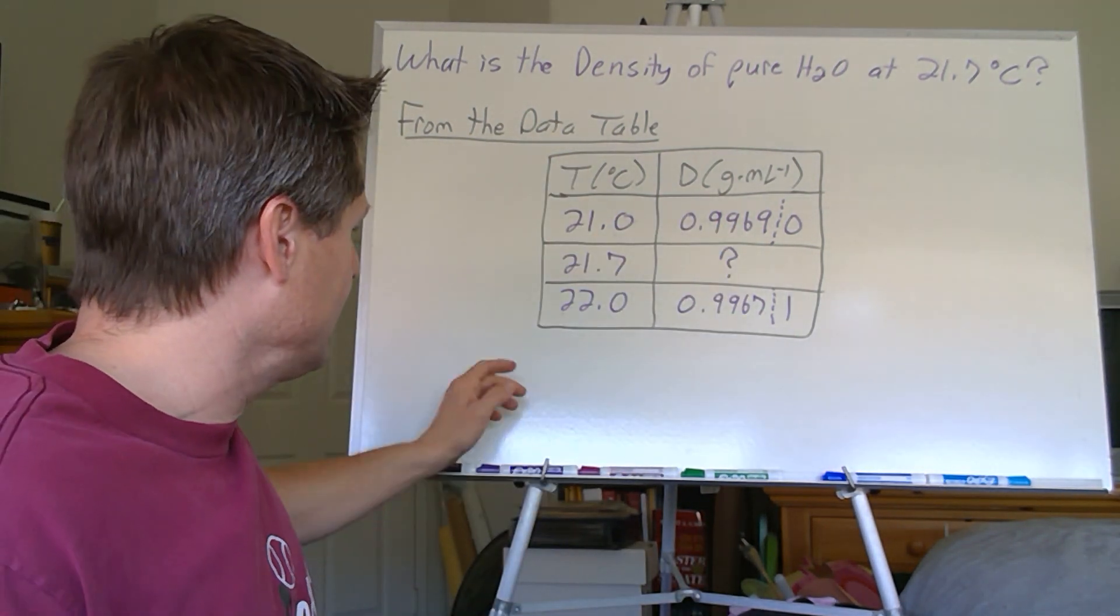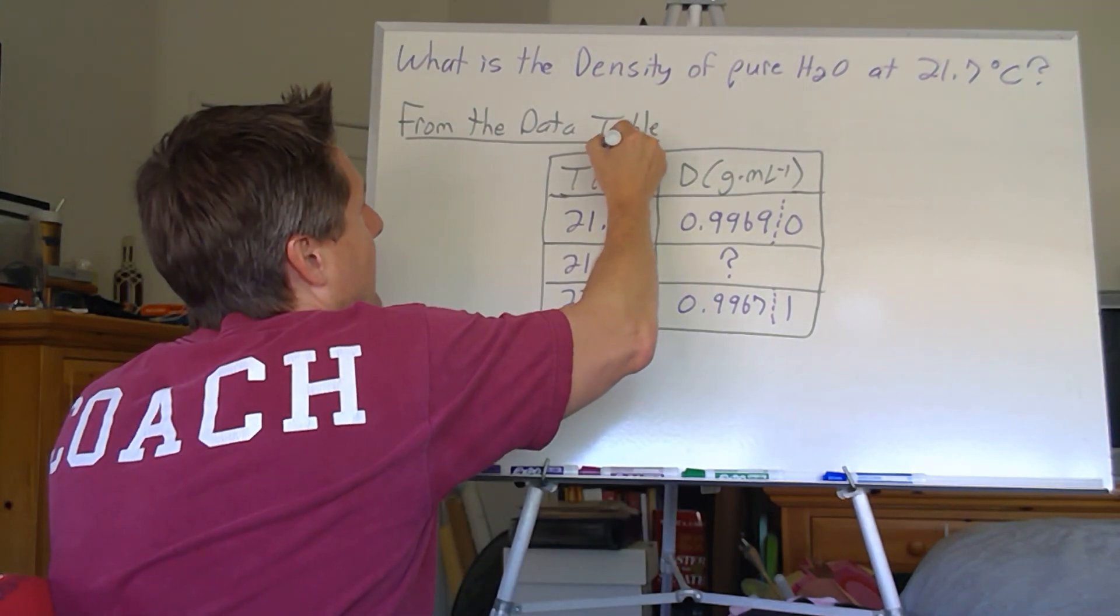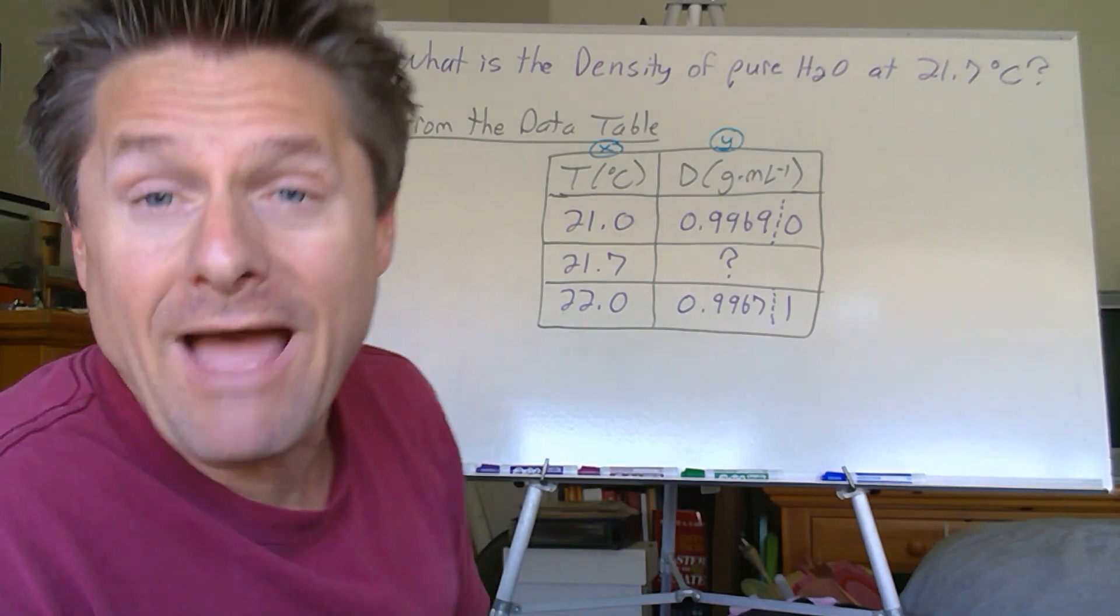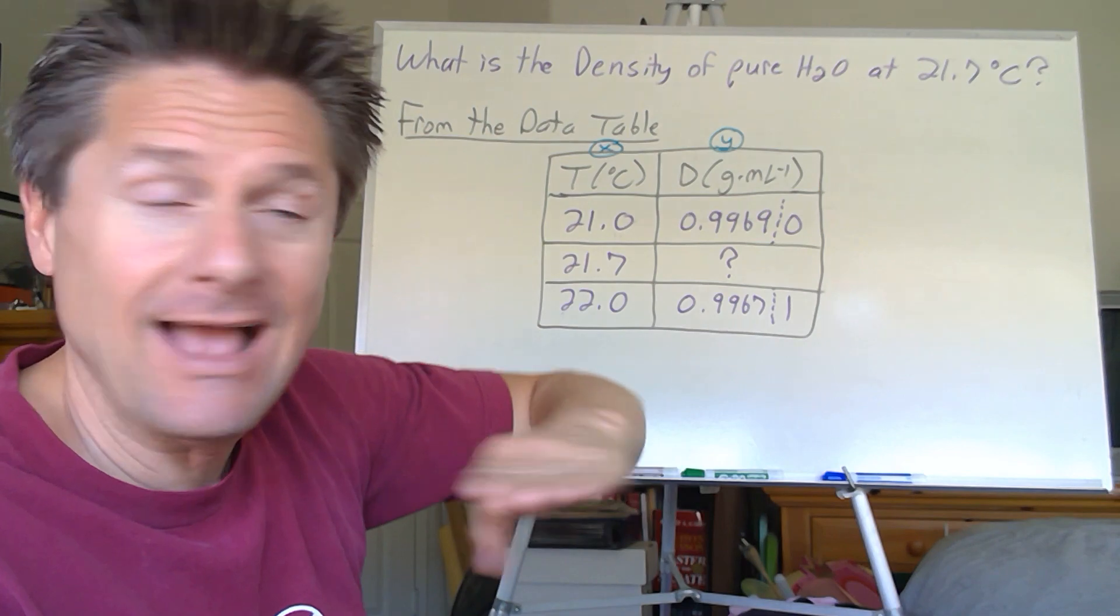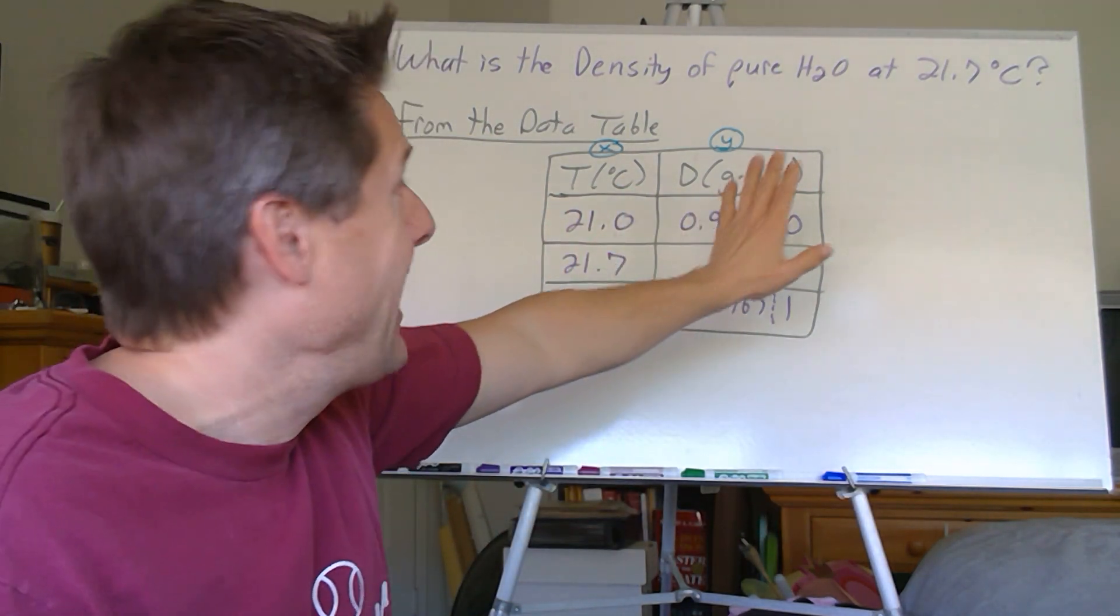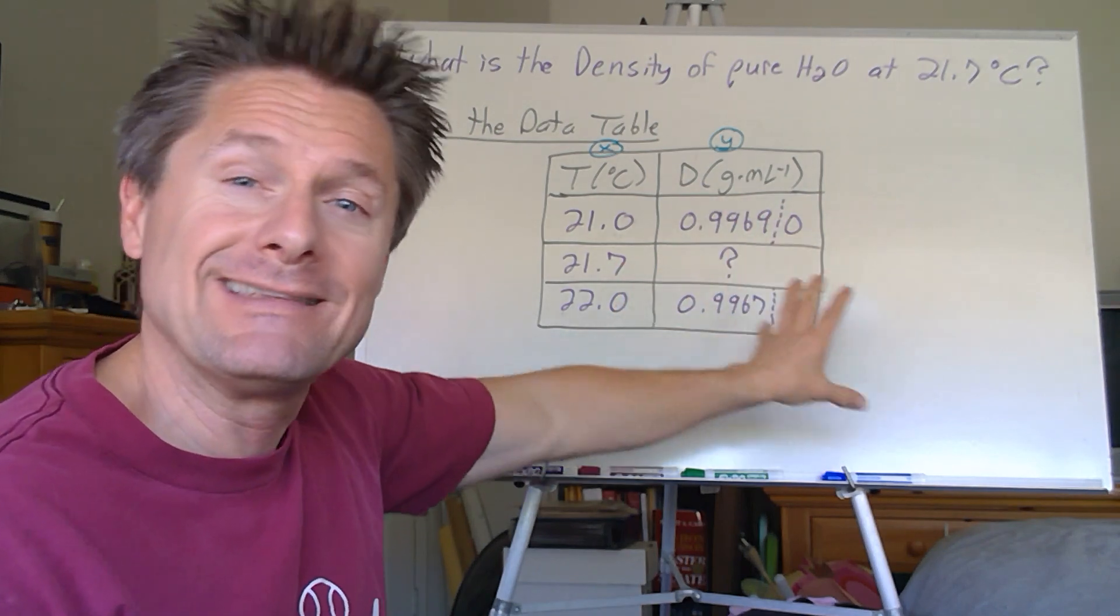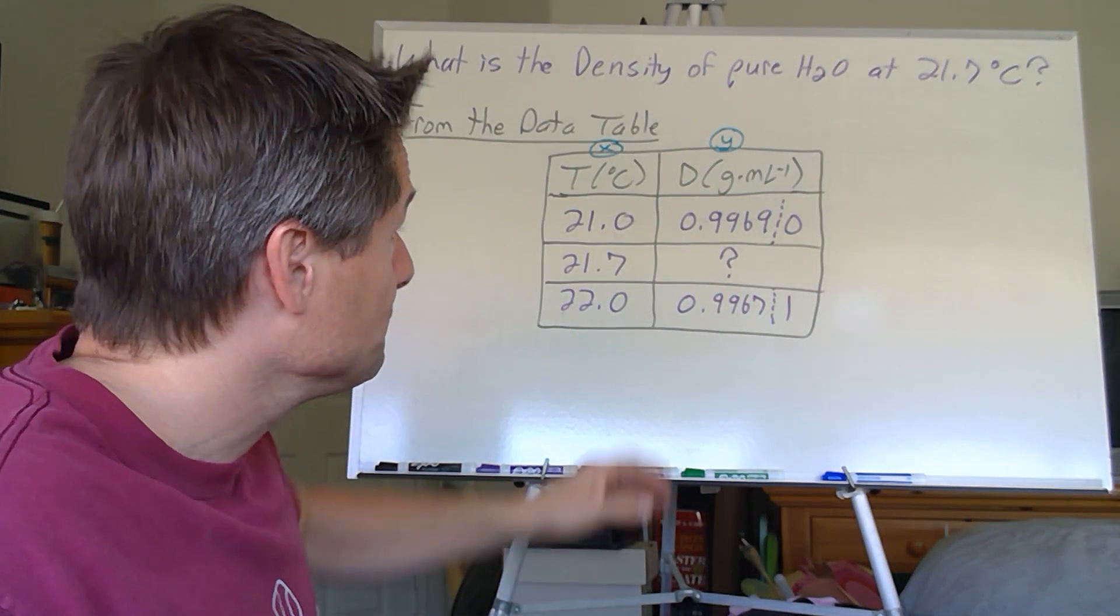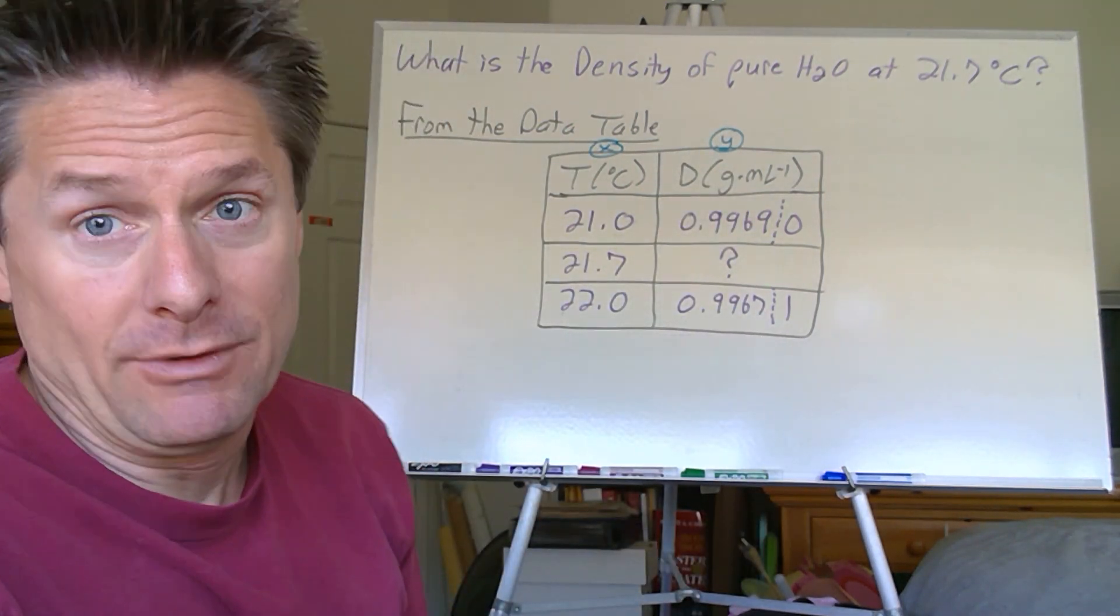Say we're going to convert the volume to a mass, right? We want to get an accurate mass or mass to volume, get a more accurate volume. Rather than measuring in a graduated cylinder, we measure the mass of the water, use the density to convert it to a volume. But we need to know the density, which means we need to know the temperature. So let's say it's 21.7. So what I did is I took, I don't need the whole data table. I just need the one. If I'm 21.7, I'm going to pick 21.0 and 22.0 right before and after. So there's the 0.99690 and the 0.99671. So let's say these are good to four significant digits. So we can track uncertainty.